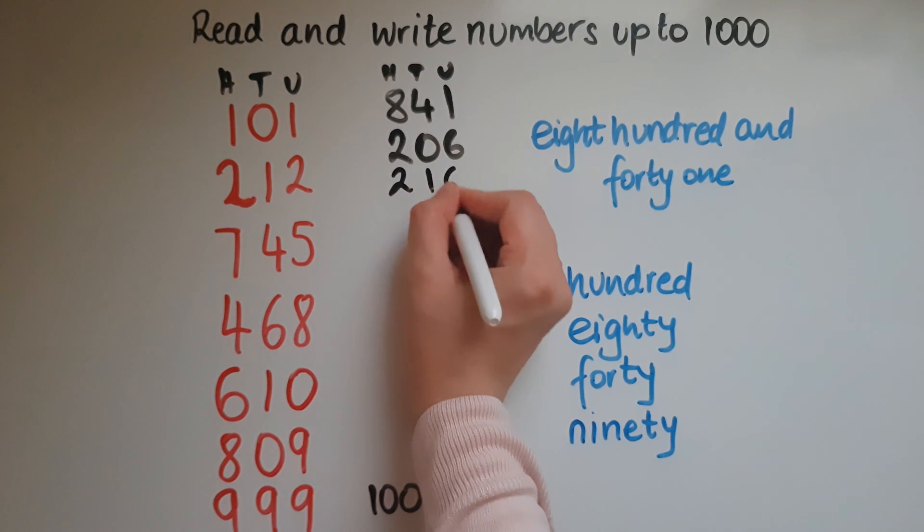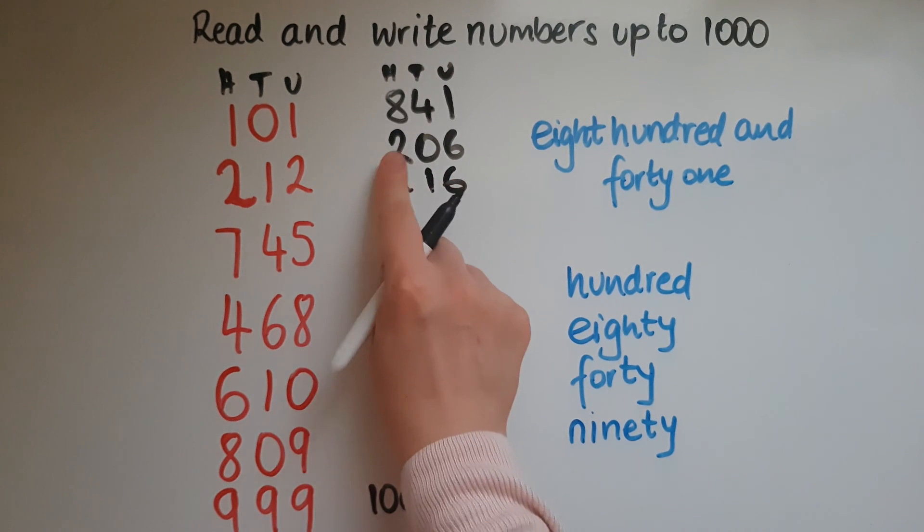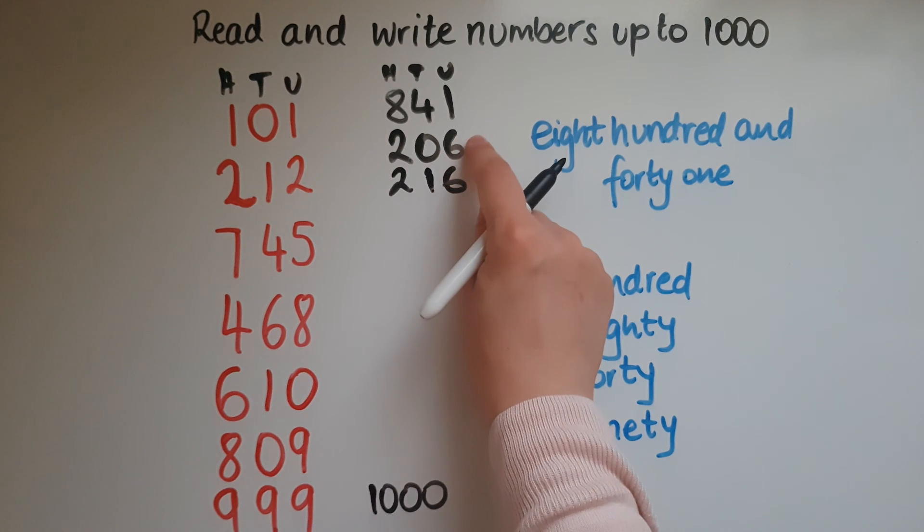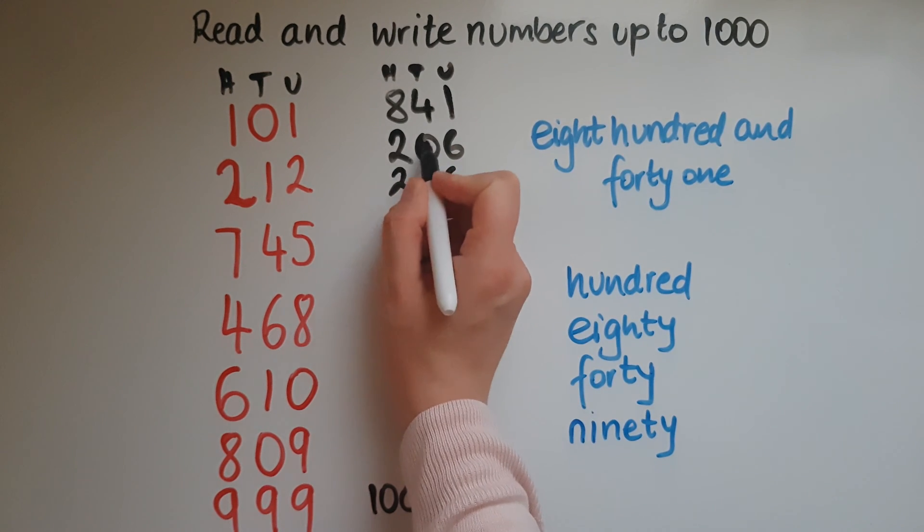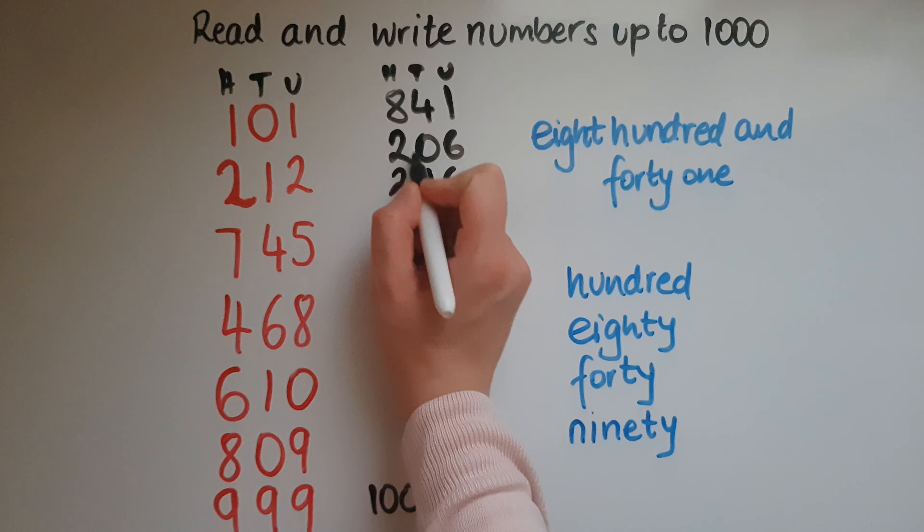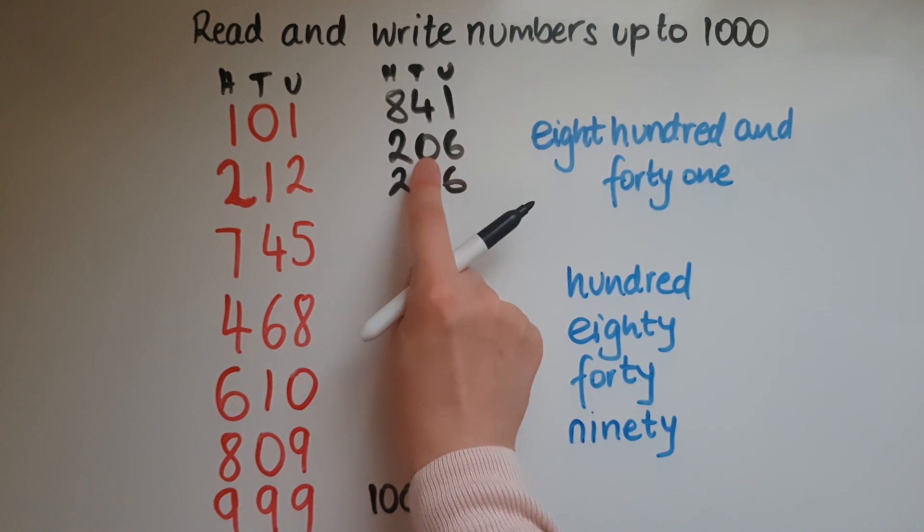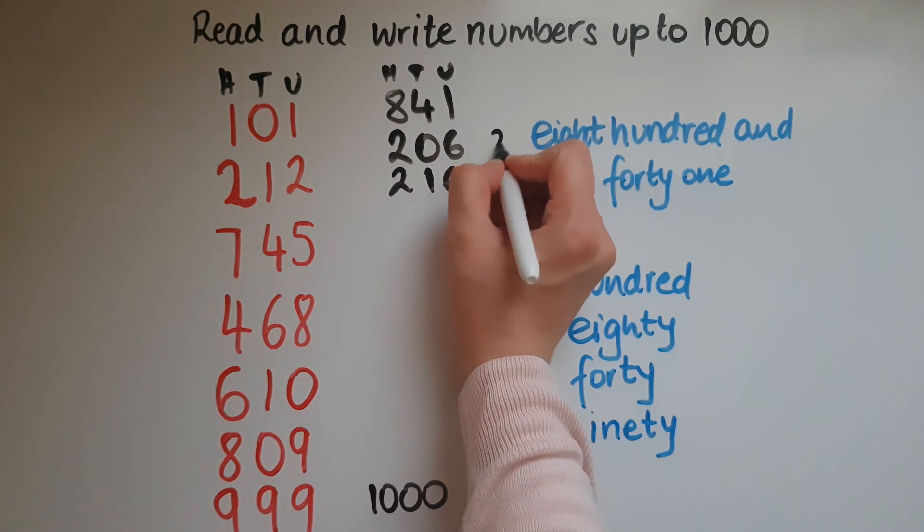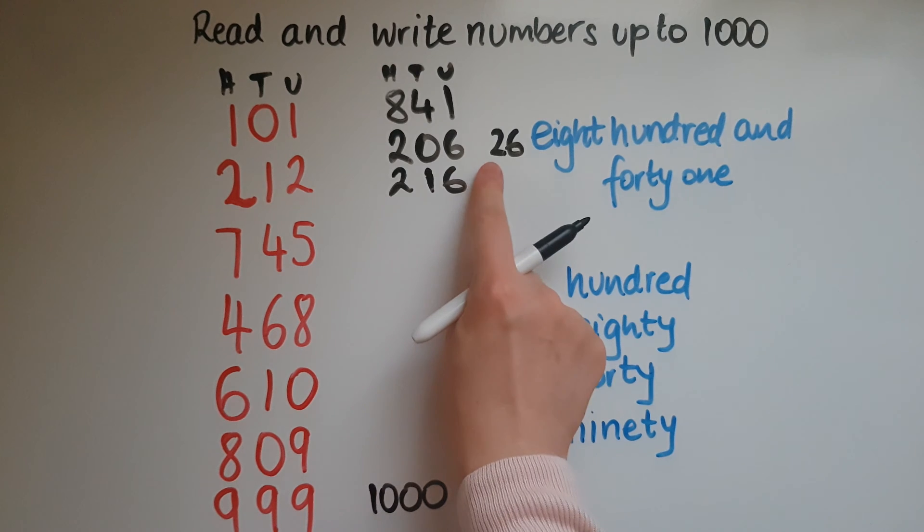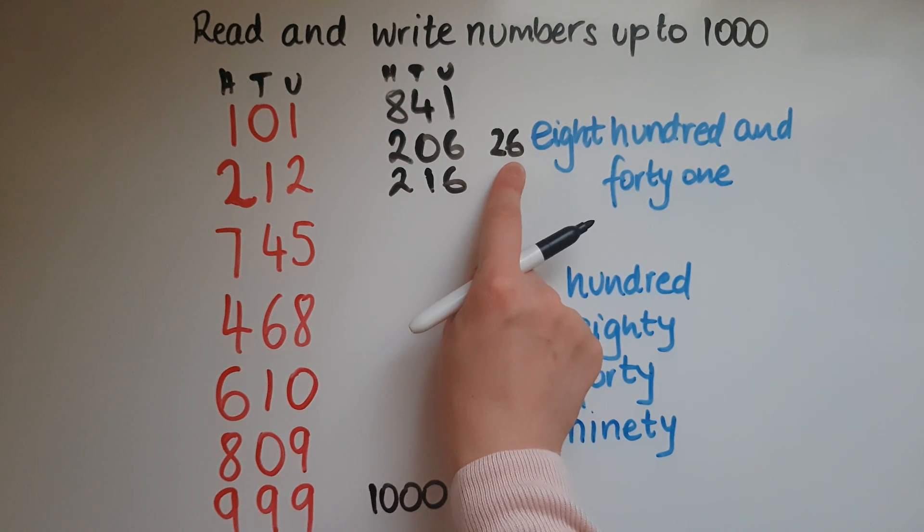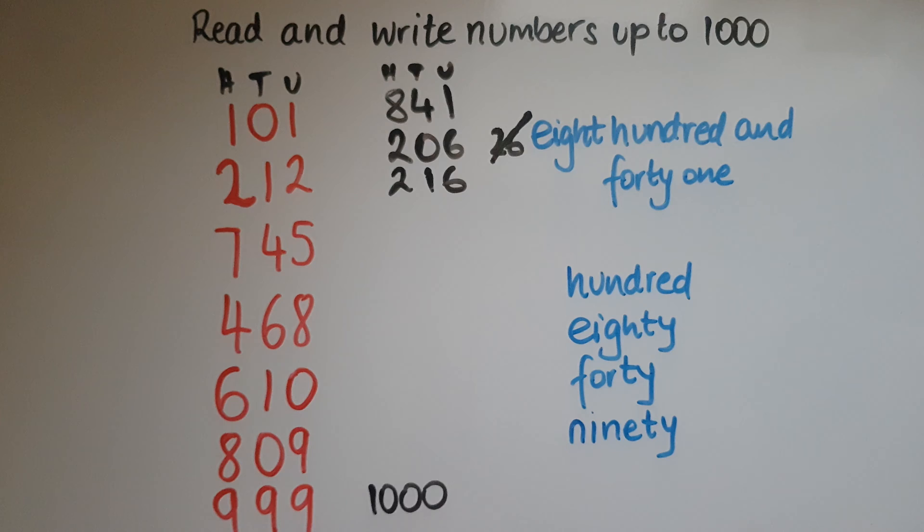So 216 would be written like this. 206 would be written in a very similar way but just with a zero in the middle to hold the place of the tens. Because if I didn't have that gap or if I didn't put the zero in there, I would end up with 26 and that's not 206. So I would cross that out.